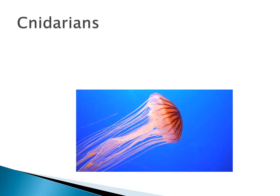Next we have the cnidarians. A jellyfish is a good example, as is the Portuguese man-of-war, hydra, and sea anemones. These creatures live in the sea and move with a wave-like motion. One thing about these is that they are quite often confused with plastic bags.